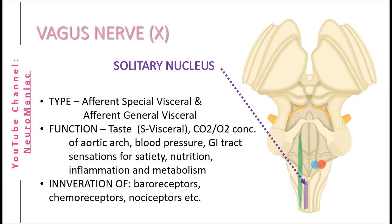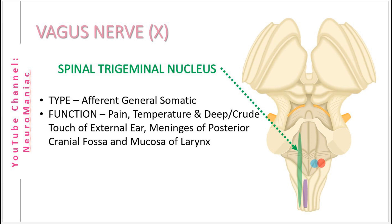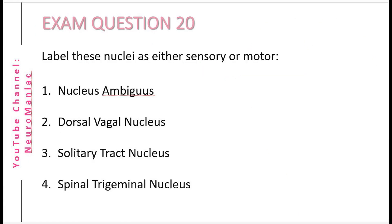Lastly, the afferent general somatic fibres from the spinal trigeminal nucleus sense pain, temperature and deep or crude touch of the external auditory canal as well as the dura of the posterior cranial fossa and mucosa of the larynx for the cough reflex.